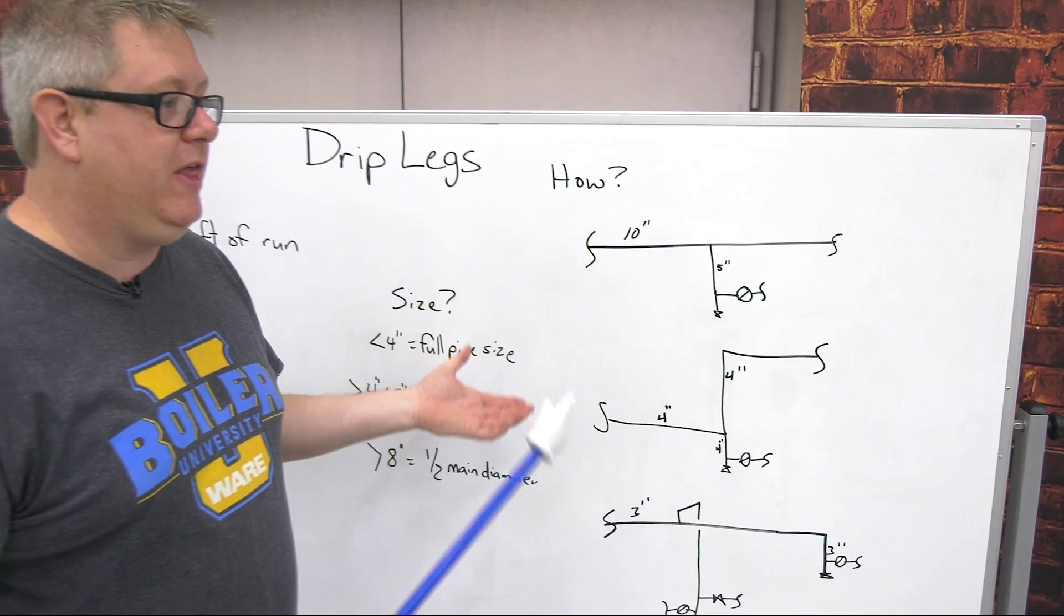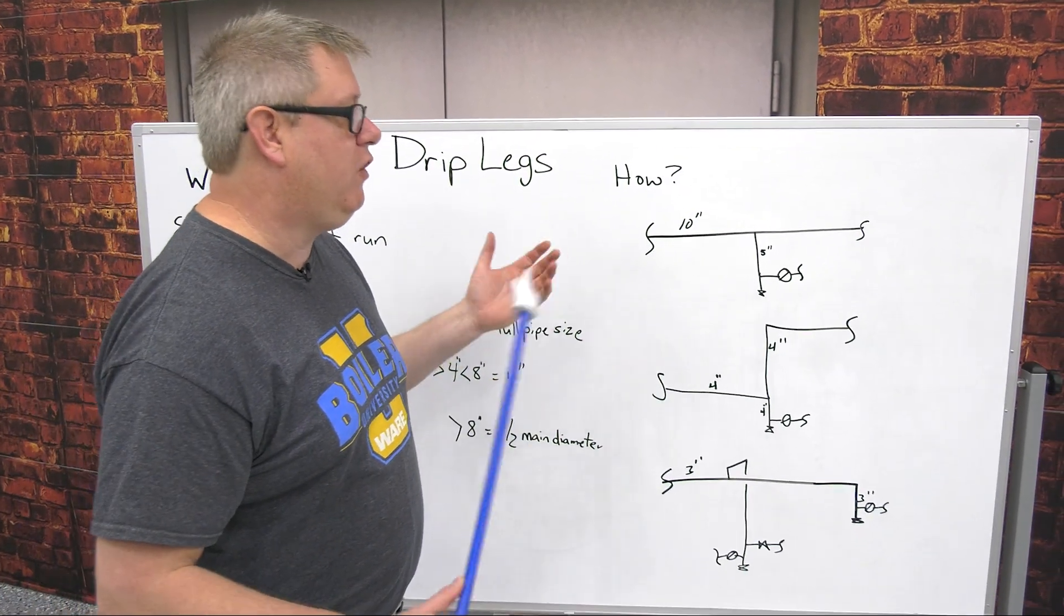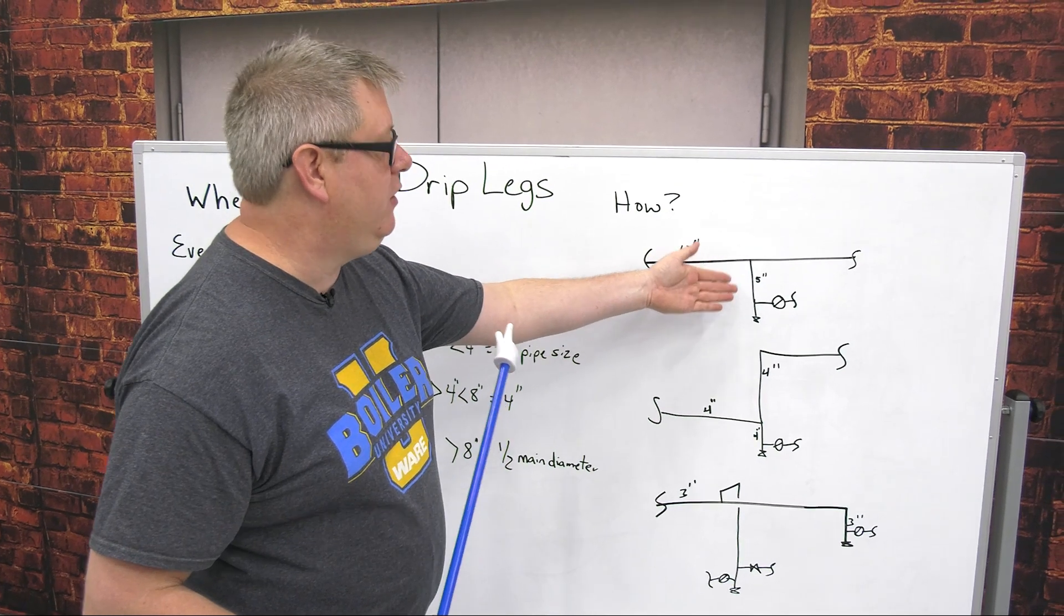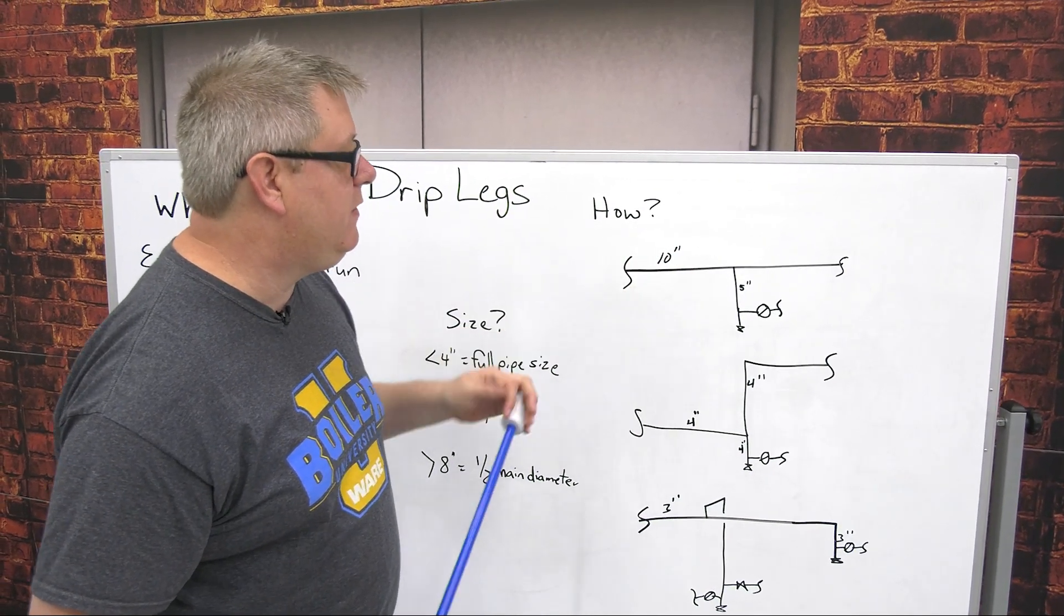In this case we would come directly off the bottom of the header, tee out the side with our trap, and we always want to put a drain on that as well for system startup. We can open that drain, clear condensate for troubleshooting, etc. There's some additional piping associated with the trap. We'll look at that next week.